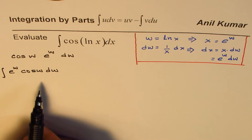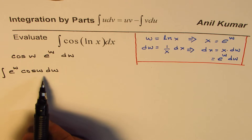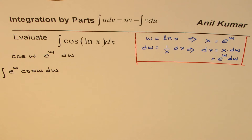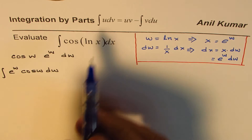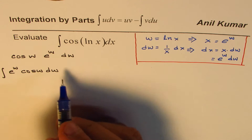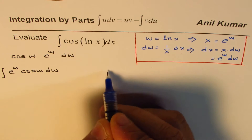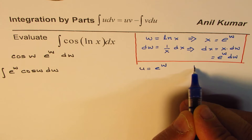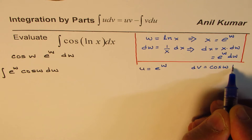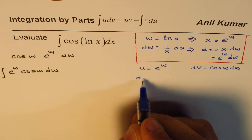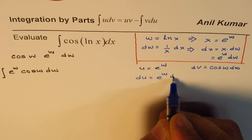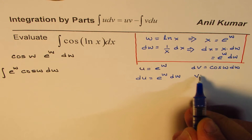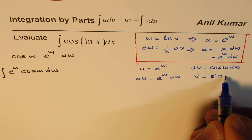These kinds of functions you have already done in integration by parts, so it should be manageable. We will do integration by parts, splitting into u and v parts. Let u = e^w and dv = cos(w) dw. Then du = e^w dw, and integrating dv gives v = sin(w).